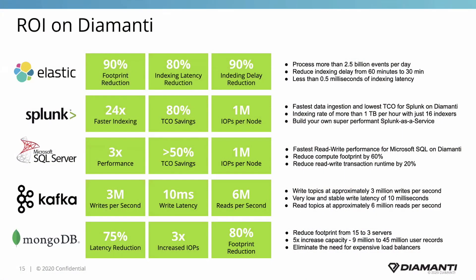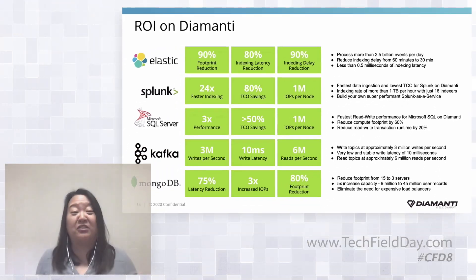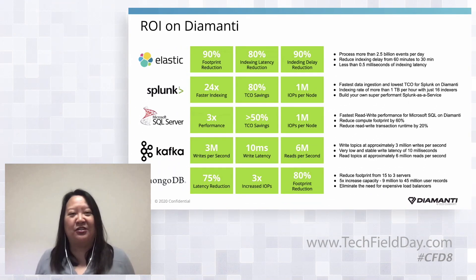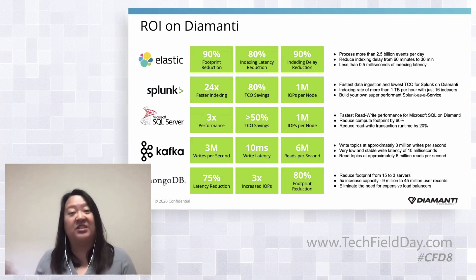On performance advantages: more companies want to containerize and operate data-intensive applications like Elasticsearch, Kafka, and Splunk — with lots of data to index and process. With our full-stack approach and IO acceleration technology, these are real performance improvement numbers we've delivered to customers. Greater performance also drives greater efficiency, meaning you can run workloads on fewer nodes with a smaller footprint, which translates into TCO savings.